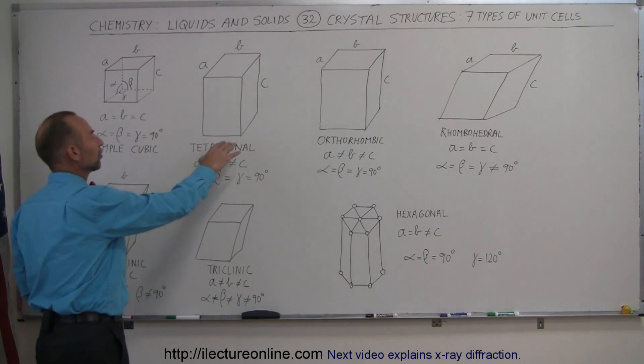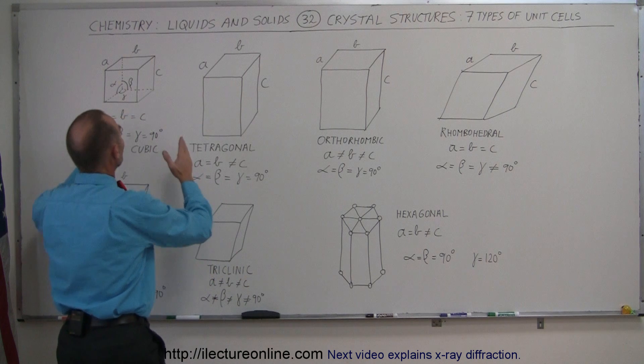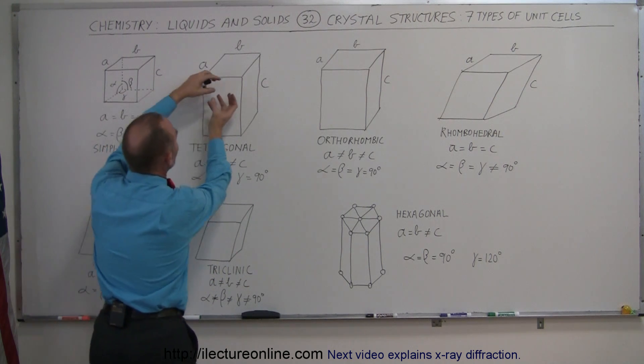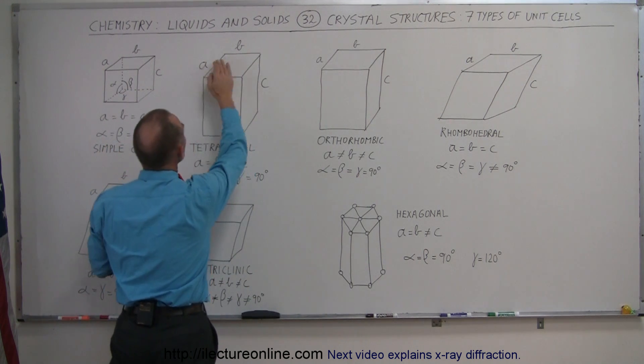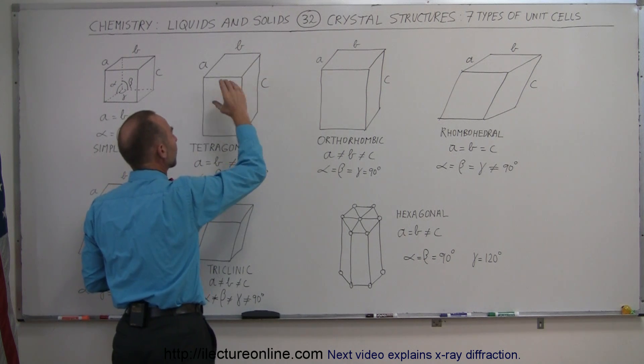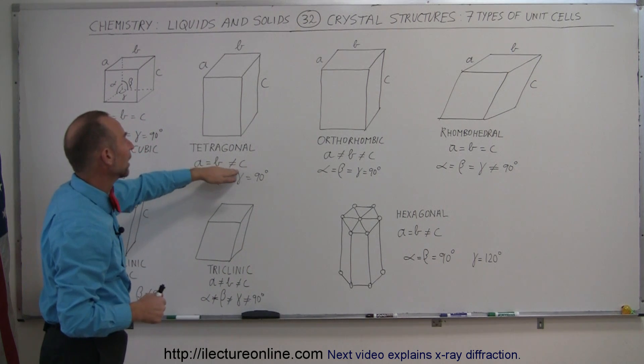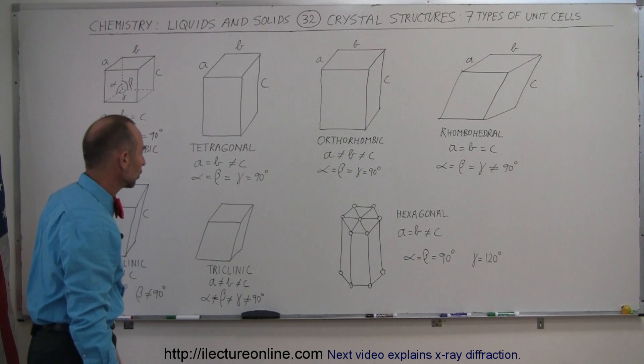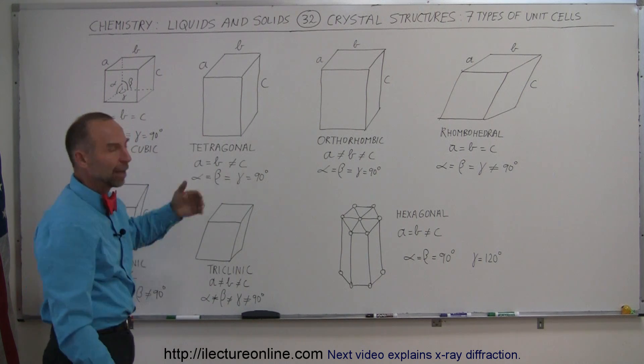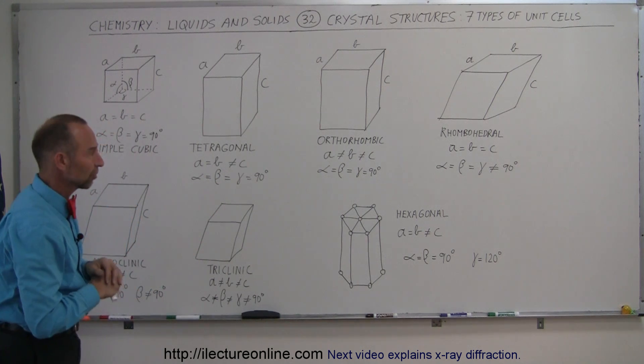We have what we call tetragonal, which is basically a simple cubic structure that has been elongated. So A and B are still the same, the base is the same, but instead of a straightforward cube, it's now a rectangular cube, so to speak, a longer cube in one dimension. So A is equal to B, but not equal to C. C is typically longer, and the angles are still the same, so it's still 90 degree angles in all directions.